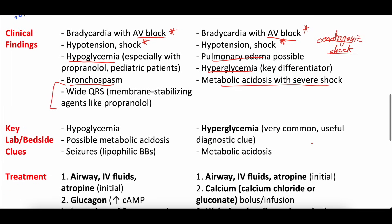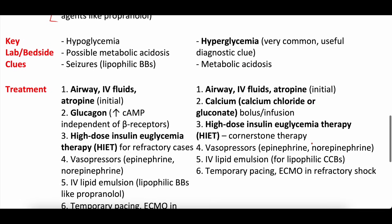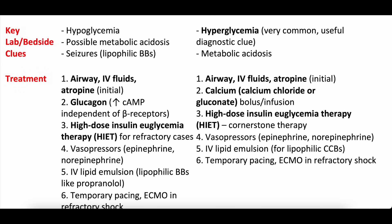Key labs and bedside findings come back to the primary mechanisms. The key lab differences are hypoglycemia with beta blockers and hyperglycemia with calcium channel blockers — hopefully ingrained in your brain by now. Seizures are more common with lipophilic beta blockers like propranolol. Metabolic acidosis is more common in calcium channel blockers, though this isn't perfectly applicable because someone in cardiogenic shock from a beta blocker overdose can certainly develop metabolic acidosis too.